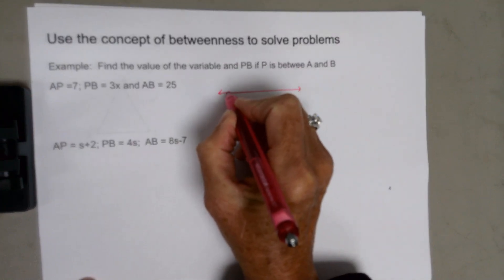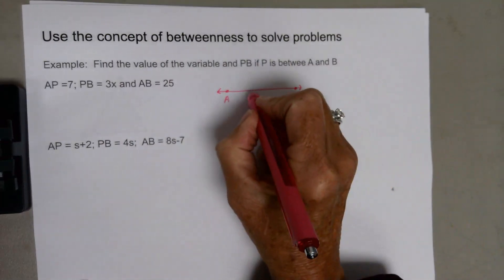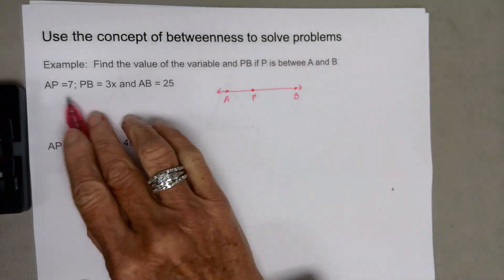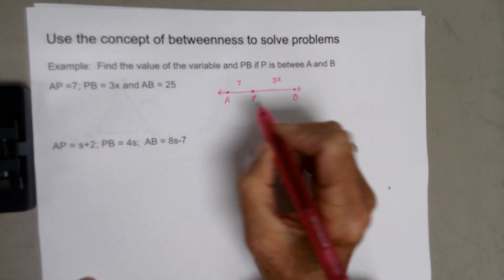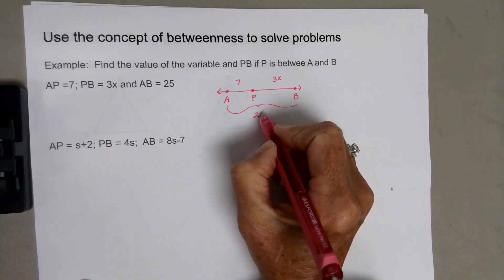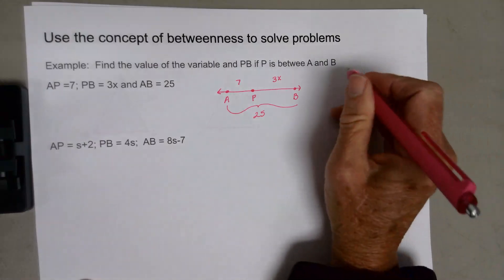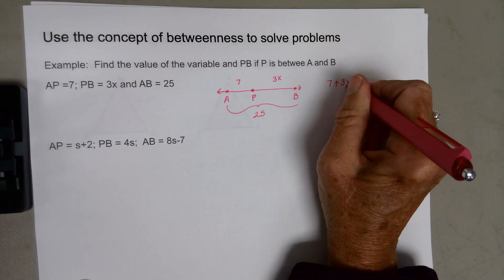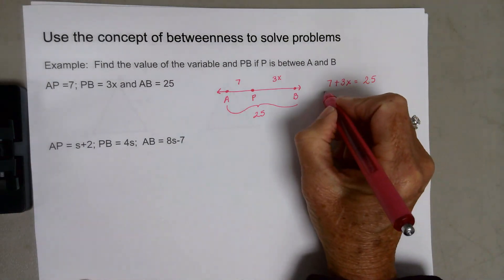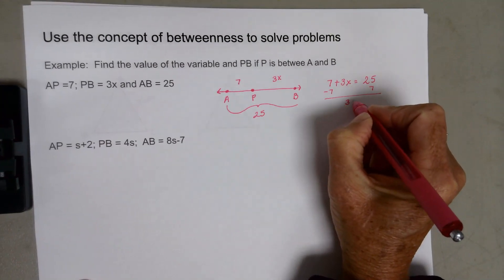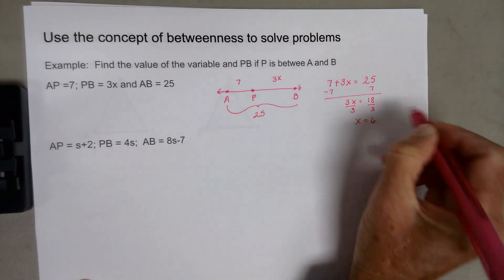Go ahead and draw your illustration so you can understand what's going on. There's the line AB, with P somewhere between those points. It tells me AP is 7, PB is 3x, and AB is 25. You can see that 7 plus 3x should equal 25. Subtracting 7 from both sides gives 3x equals 18; dividing by 3 gives x equals 6.